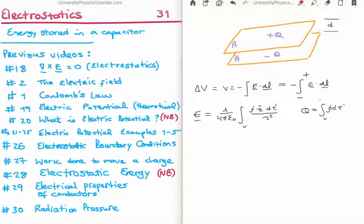So we know of course that the change of potential delta V or the potential between two points is minus the integral of E dot dl. So if I want to calculate the potential of our capacitor in this case it's going to be minus the integral from the minus plate to the positive plate of E dot dl.